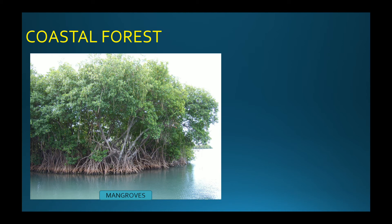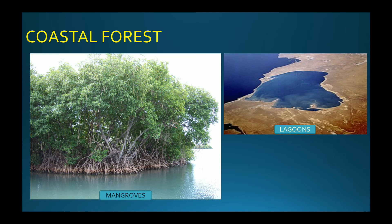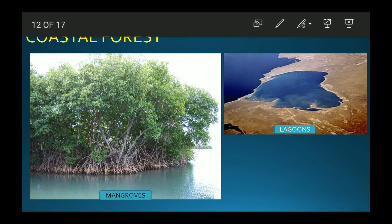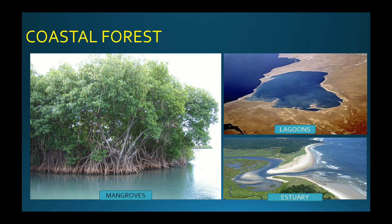Mangroves are a very important part of the ecosystem. A lagoon is a stretch of salt water separated from the sea by a coral reef or other barriers. An estuary is the tidal mouth of a large river where the tide meets the stream — where river water meets sea water, that is the mixing of fresh water with salt water. It is a place where we can find aquatic plants, fish and birds.